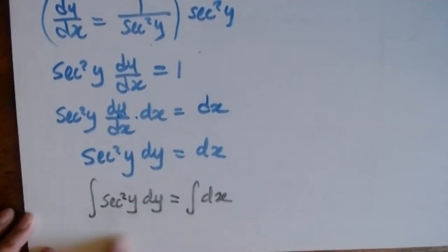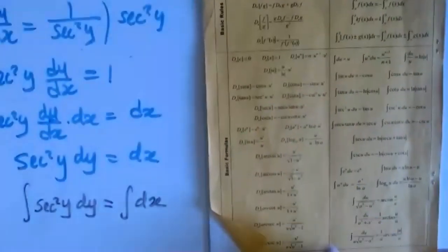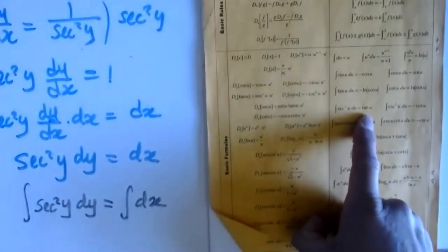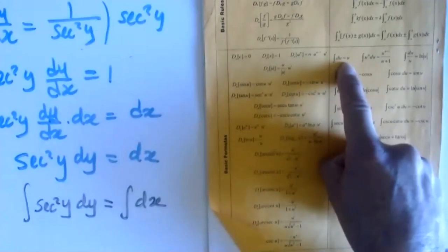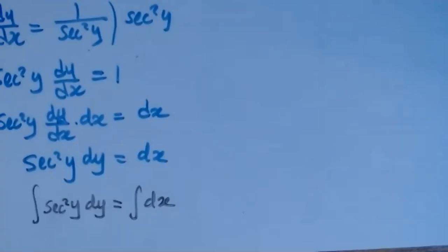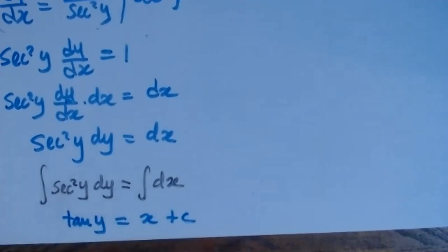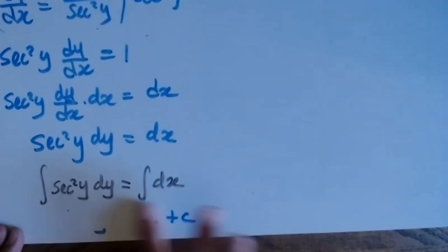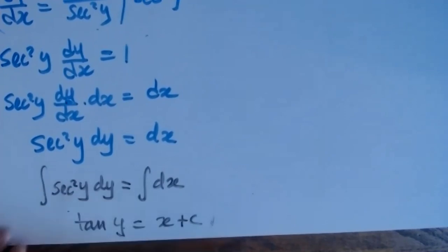Remember the antiderivatives: the antiderivative of sec²(u) is tangent(u), and the antiderivative of 1 dx is x. So: tangent(y) = x + C. That is my answer — let me write it in a different color: tangent(y) equals x plus C.